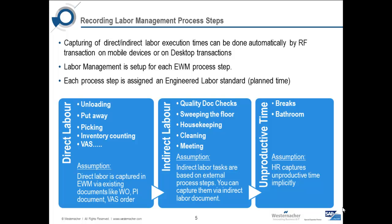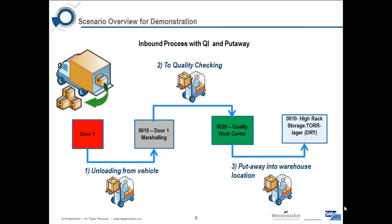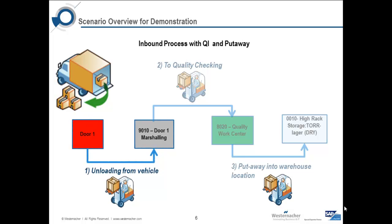Indirect labour tasks are ad hoc activities that are not related to standard EWM processes and can be created as required. For example, checking quality documentation, sweeping the floor, housekeeping etc. All other processes are not recorded in labour management. Each process step that is recorded in labour management has a planned duration defined. This is calculated automatically with predefined formulas. In our process flow, we now have a task for unloading from the vehicle.